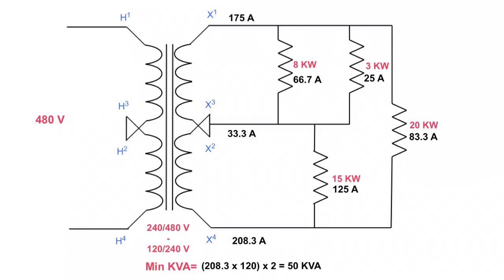You're not generally going to rate your transformer right to the minimum — you'd get a bigger size than 50 KVA in case you want to add more loads in parallel. But our problem today was to determine the minimum KVA. So remember: work out each line current, take the higher of the two line currents, multiply it by the winding voltage to get the KVA, then multiply by two if you have a dual winding transformer. That gives you your minimum KVA.